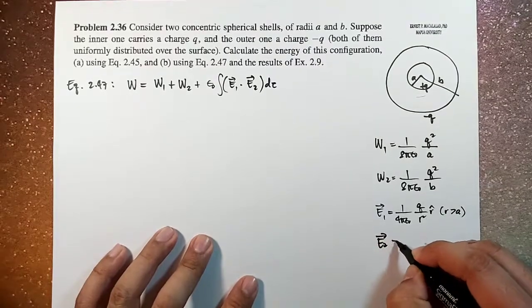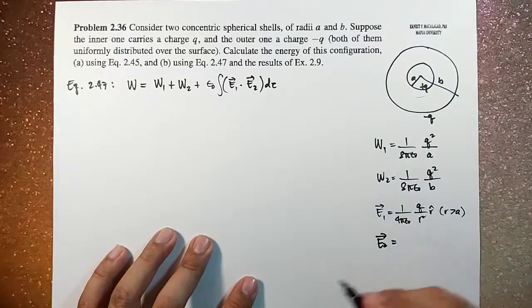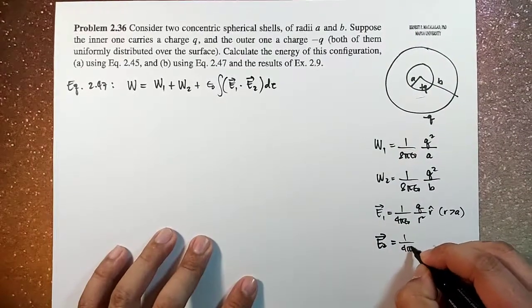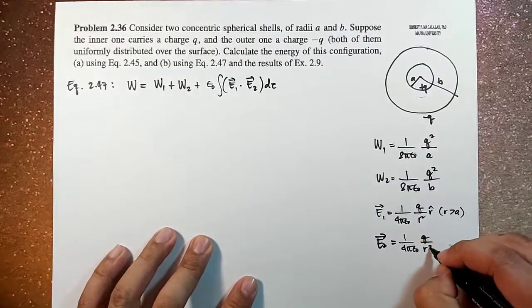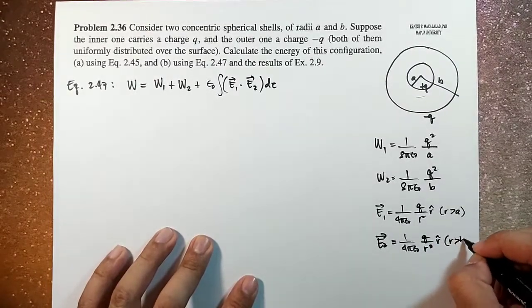E2, on the other hand, is for the second outer, or for the outer shell. And that is equal to 1 over 4 pi epsilon naught Q over R squared R hat for R greater than B.